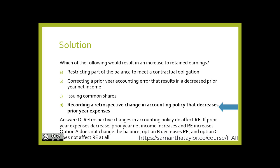If you said D — recording a retrospective change in accounting policy that decreases prior year expense — that would be correct. If we're decreasing a prior year expense, that means we are effectively increasing that prior year's income. So if we had understated a prior year's income, that would actually be an increase to our retained earnings this year, which would be a credit to our retained earnings. All right, that's it for this video. I'll see you in the next.